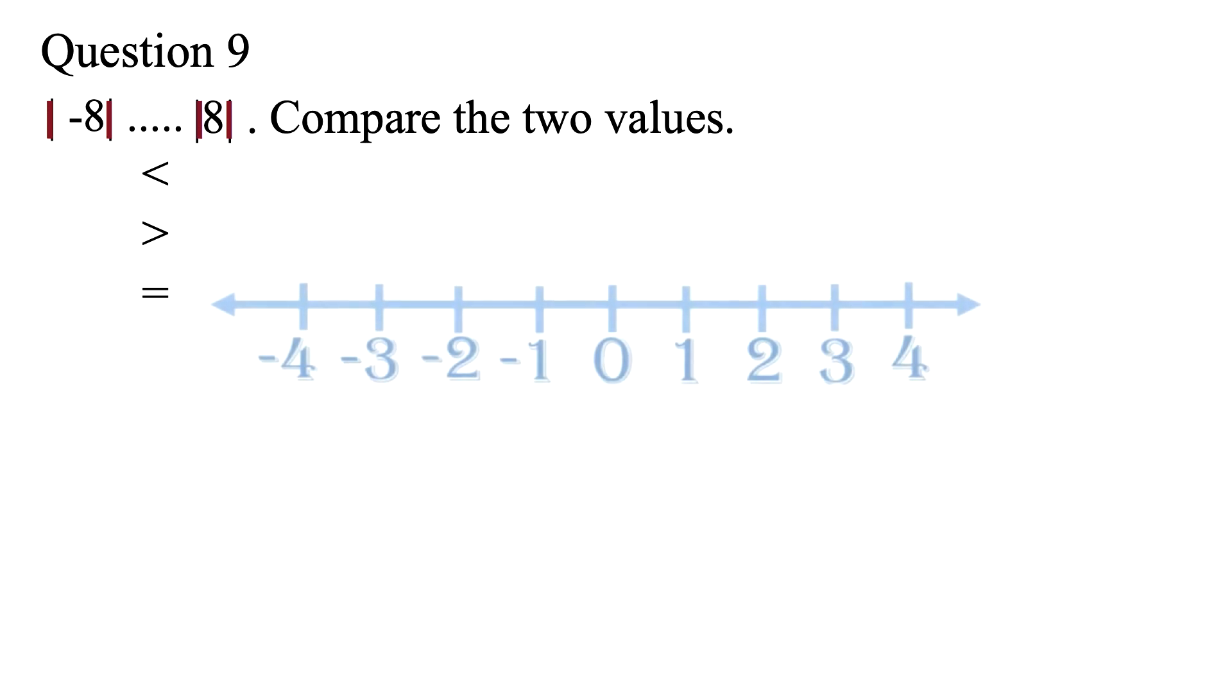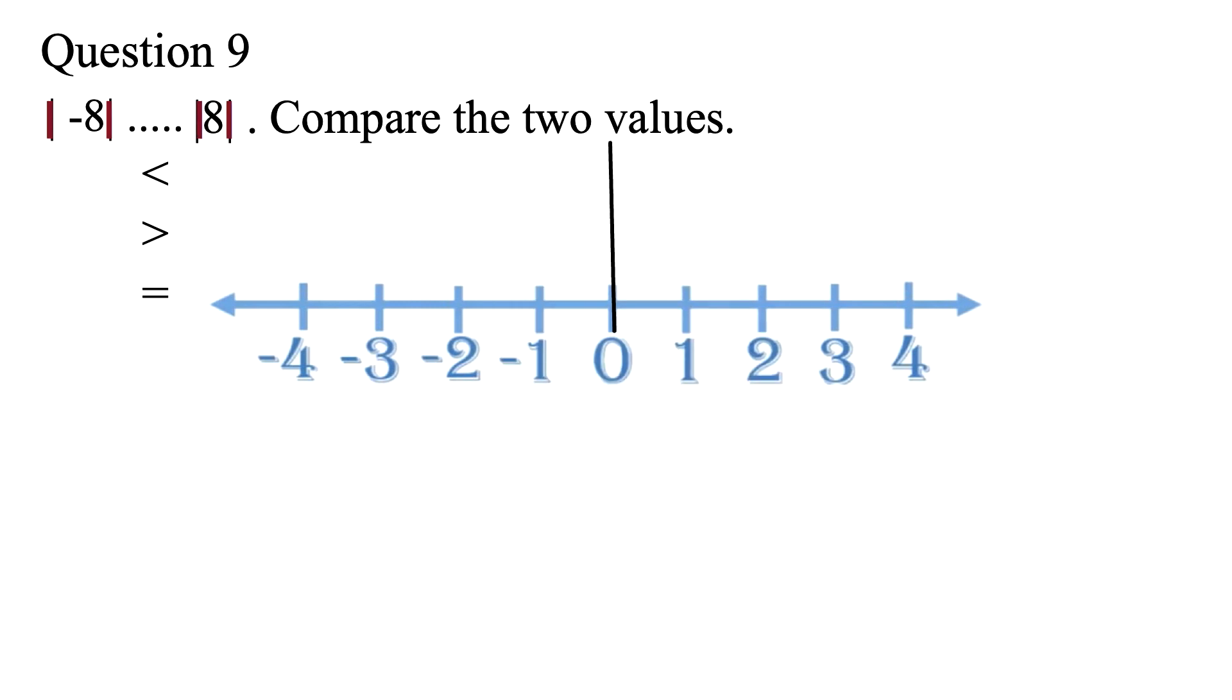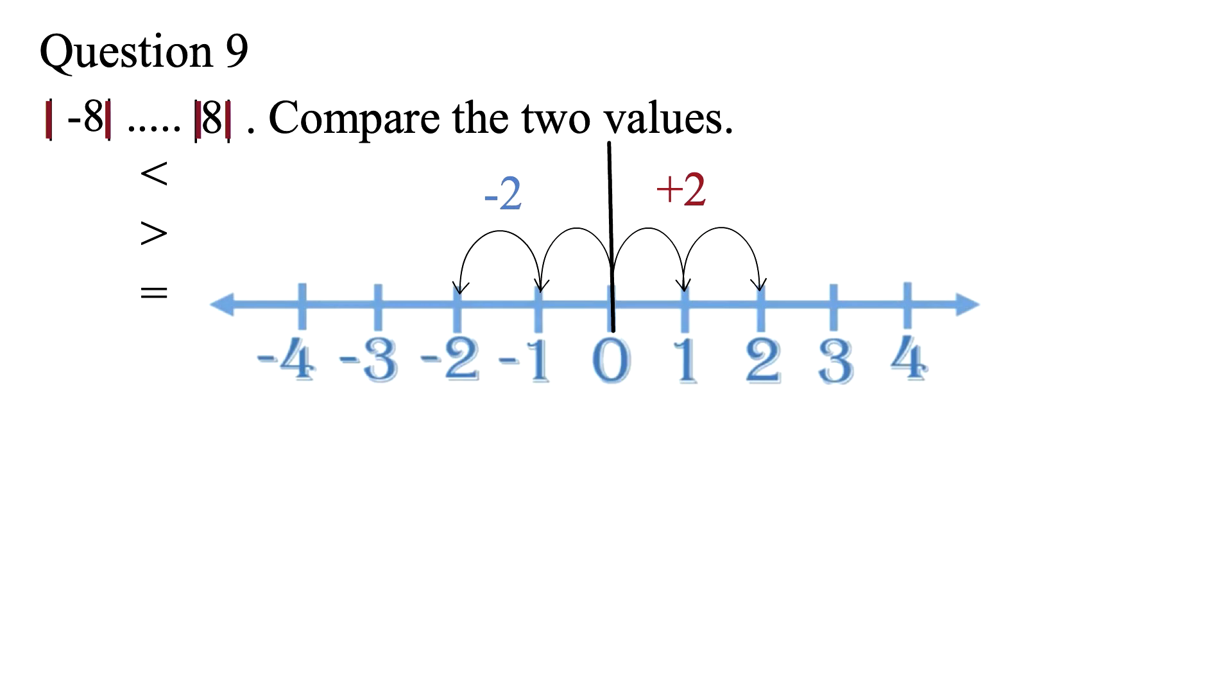Let's bring our number line to explain absolute values. This is a number line with integers. Starting from 0, when we move 2 to the right, we say we've moved positive 2. When we move 2 to the left, we say we've moved negative 2.